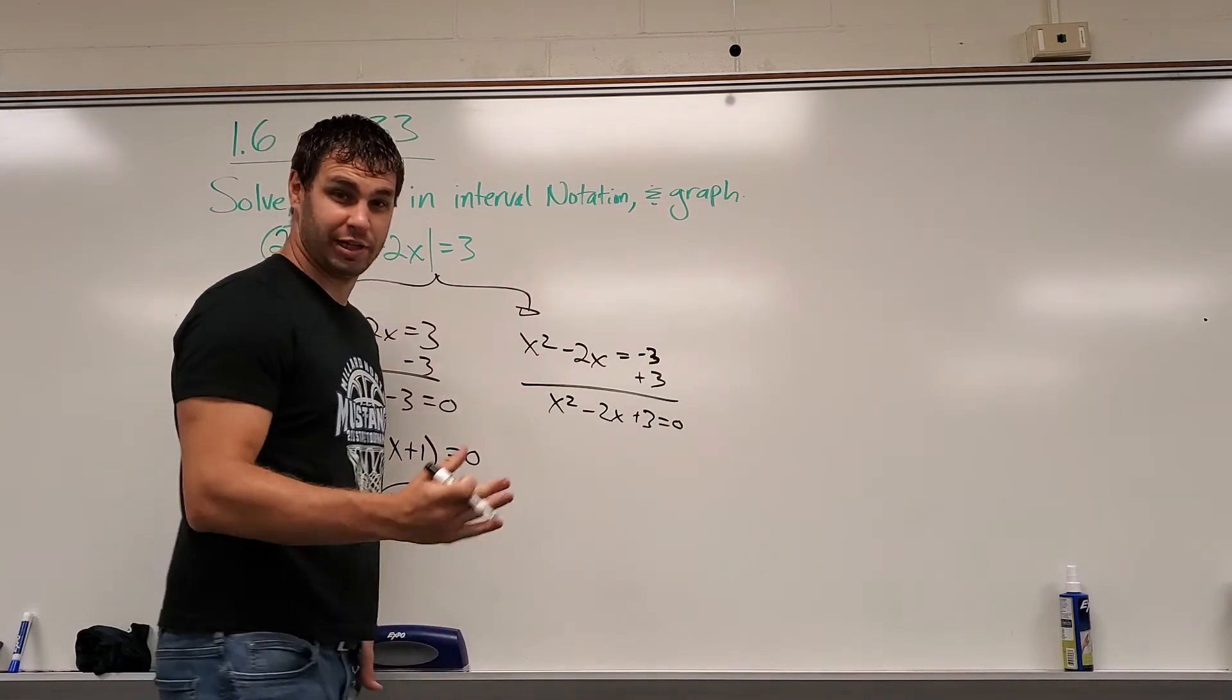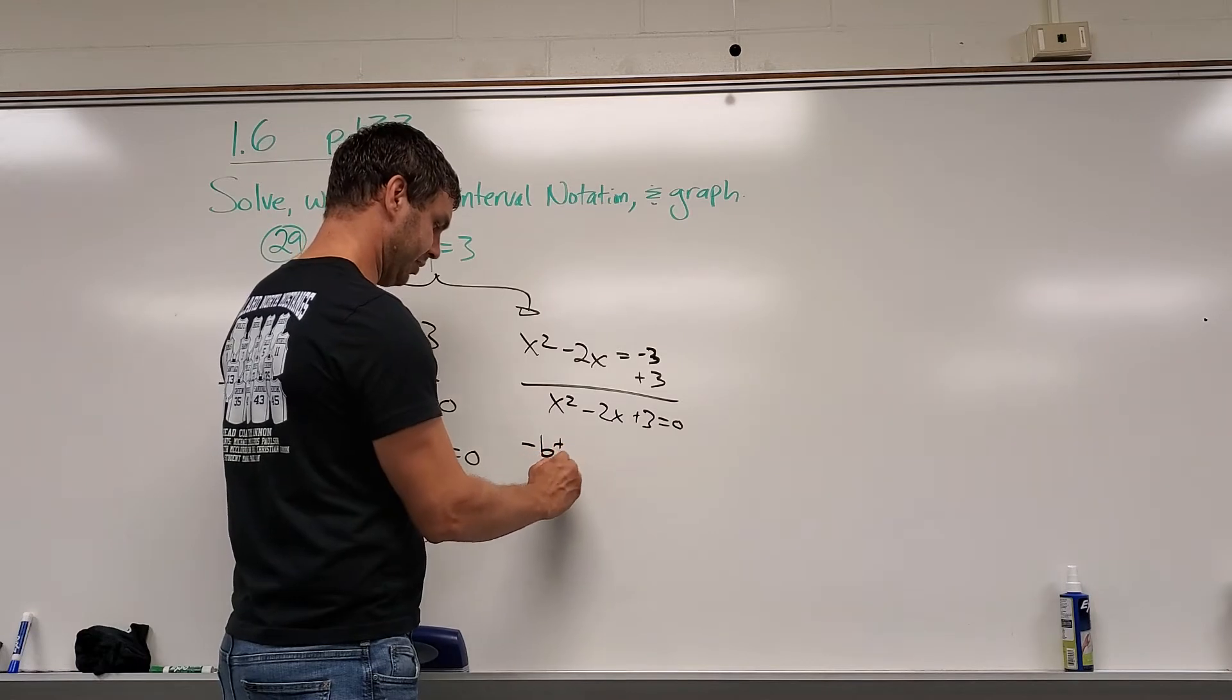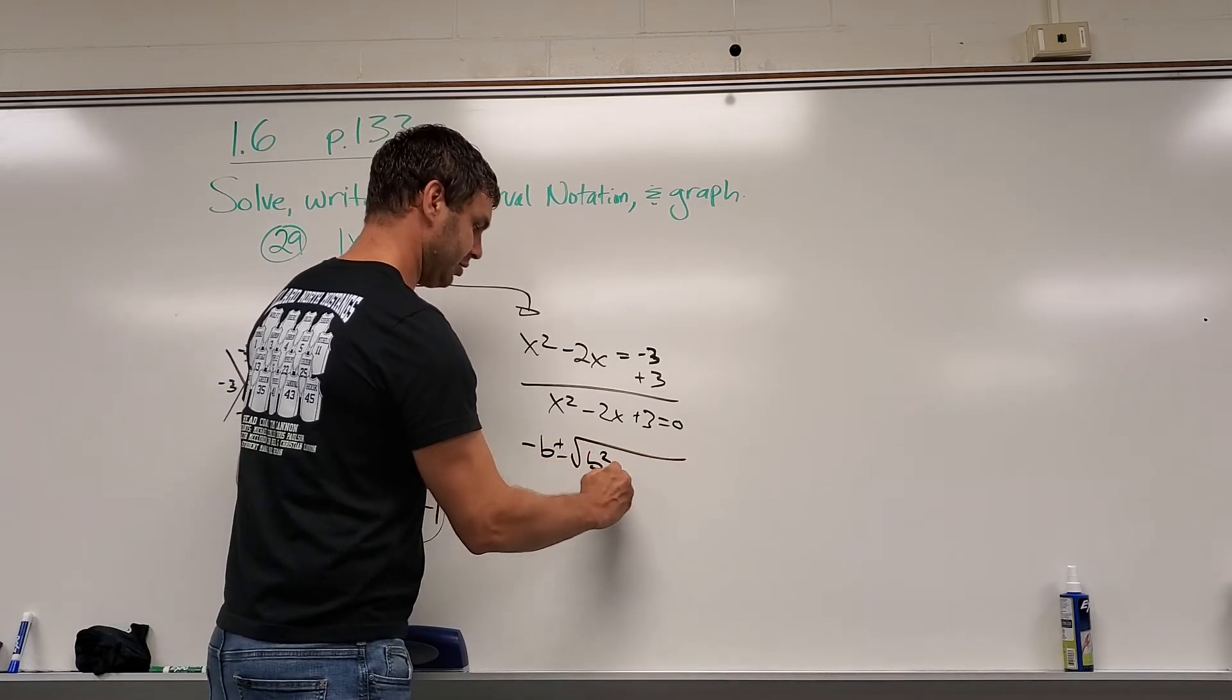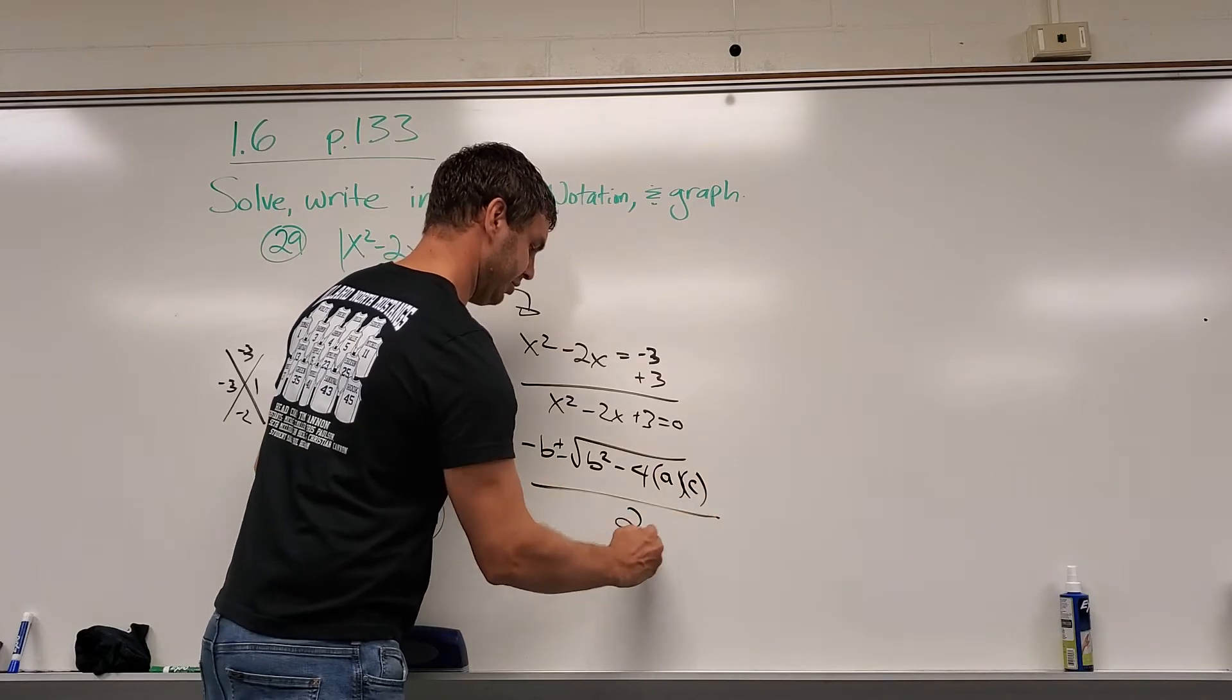So we do have to try the quadratic equation, which, if you remember, is going to be negative b plus or minus the square root of b squared minus 4ac, all divided by 2a.